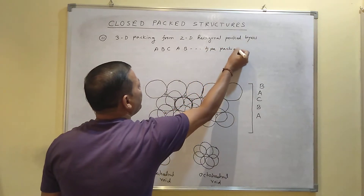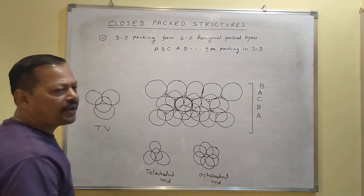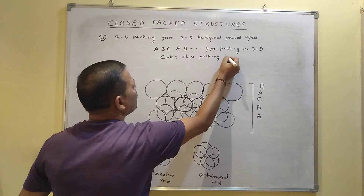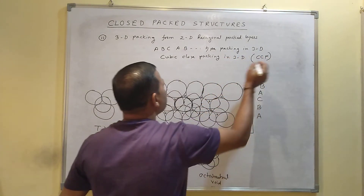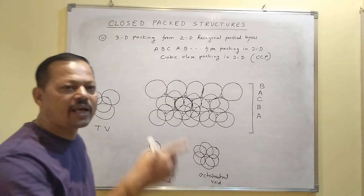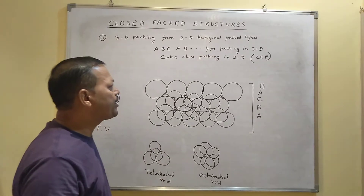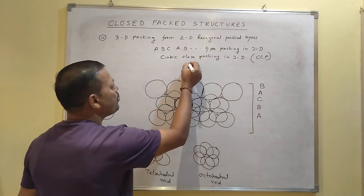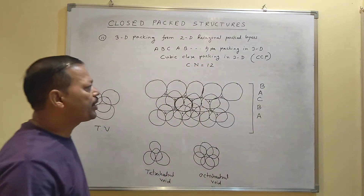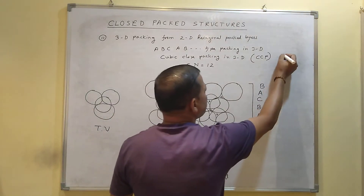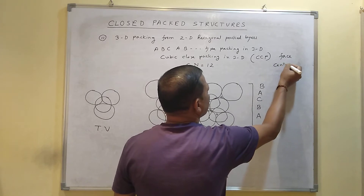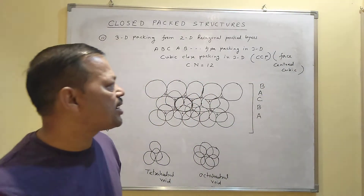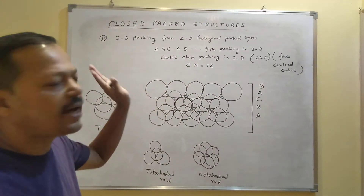ABCABC type packing in 3D is also called cubic close packing, abbreviated as CCP. Hexagonal close packing is represented by HCP. Cubic close packing is also found to be like the face-centered cubic unit cell, where particles are at the corners and the center of each face. So face-centered cubic and cubic close packing arrangements are the same.